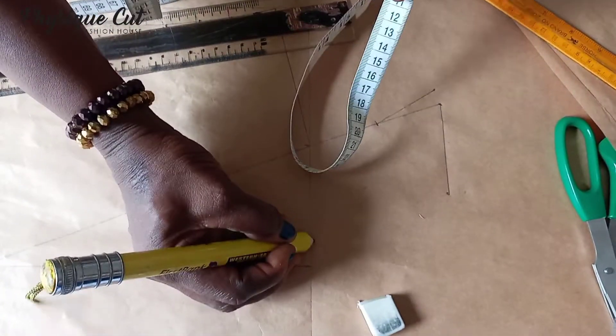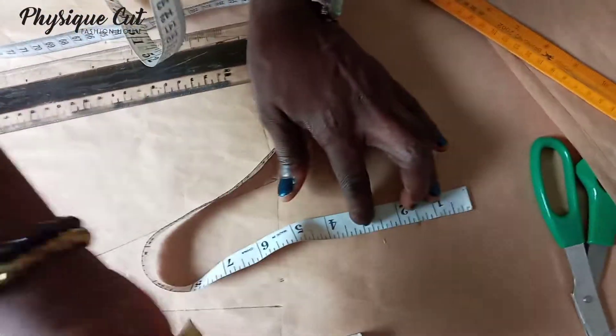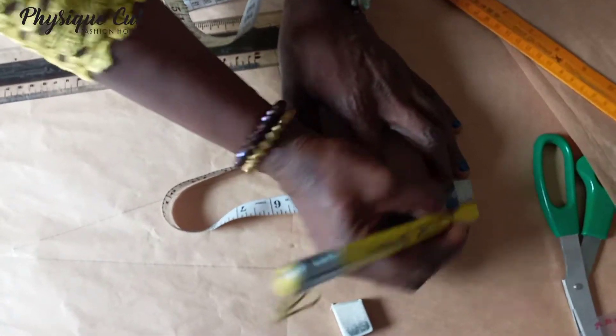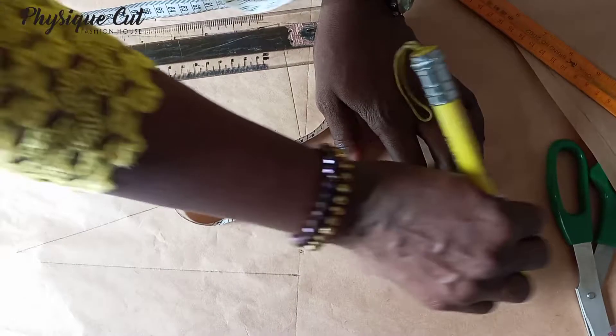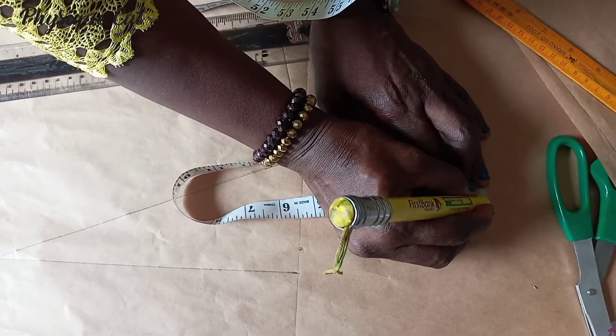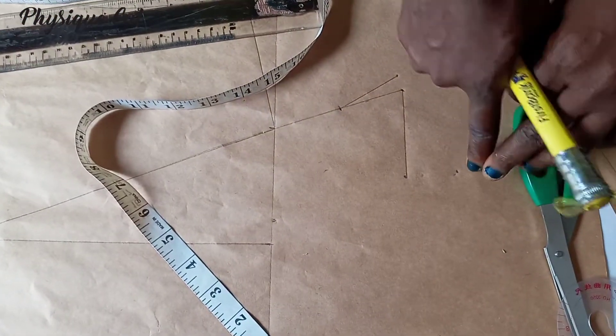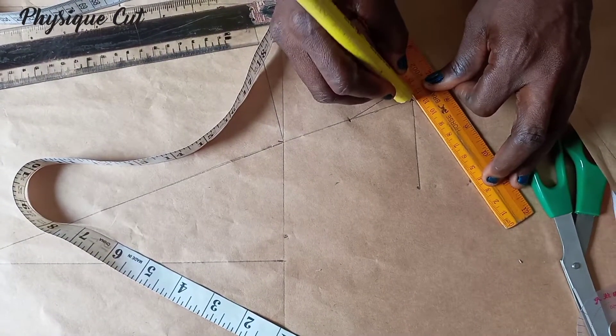So here now, you come up from this point by one and a half. All we are trying to achieve here is to give us a relaxed collar so that your collar will not be flying. You mark it. So this one now, you slantly link it to this point.